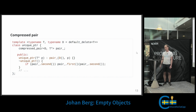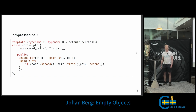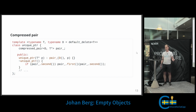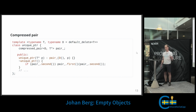If we add that to our class — we have the compressed pair where the first template argument is the deleter, because that is the object that might be empty, and the second one is the pointer. This does what we want; it will compress the size of the class to a single pointer. But as you can see, the code has become much more complex because we have to call pair.first and pair.second everywhere, and we also have to remember which is the first element and which one is the second.